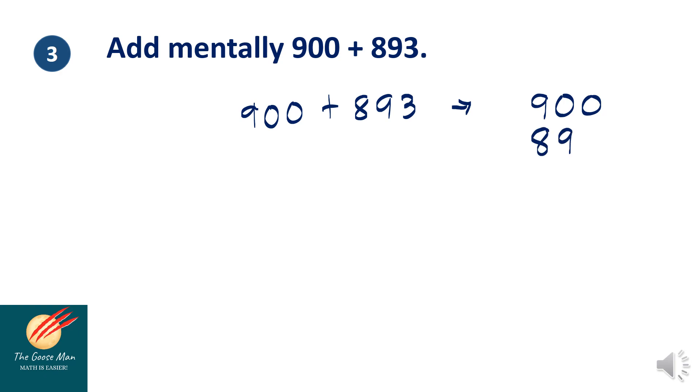Let's consider example number 3. Add mentally 900 plus 893. In order to add these numbers with the multiples of hundreds, we'll start from ones, tens, and hundreds. I can rewrite 900 plus 893 into vertical arrangement. I'll start with ones, tens, and hundreds. I can add this one mentally because there is no regrouping. 0 plus 3 is 3. 0 plus 9 is equal to 9. 9 plus 8 is equal to 17. Therefore, 900 plus 893 is the same as 1,793.